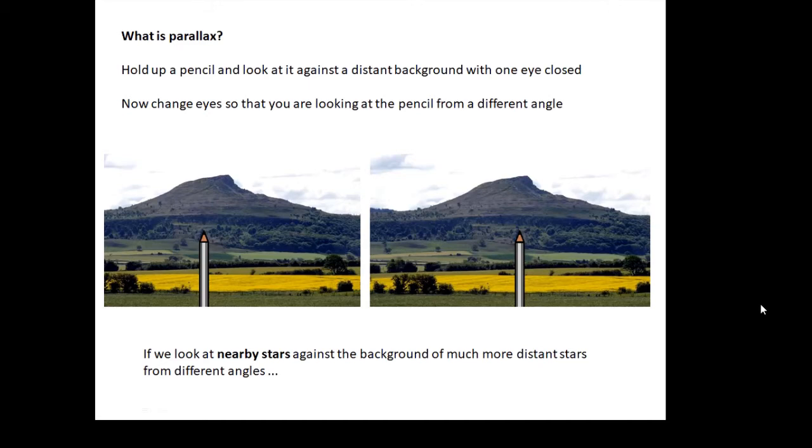And that's because you're looking at it from a different angle. When something appears to move when you look at it from a different angle, that's basically what parallax is. Now if we look at nearby stars against a background of much more distant stars, then they appear to move as well.